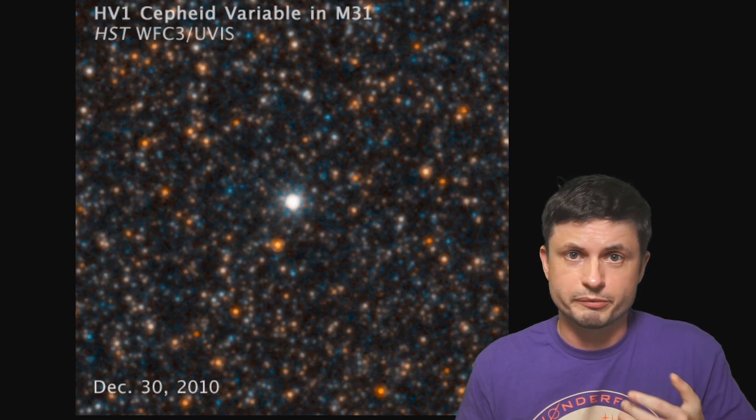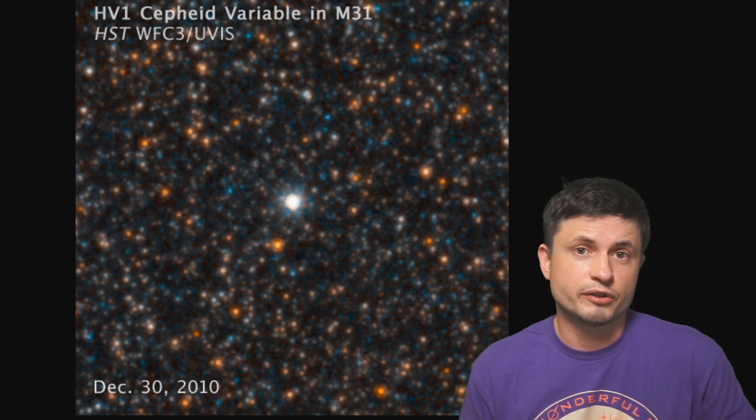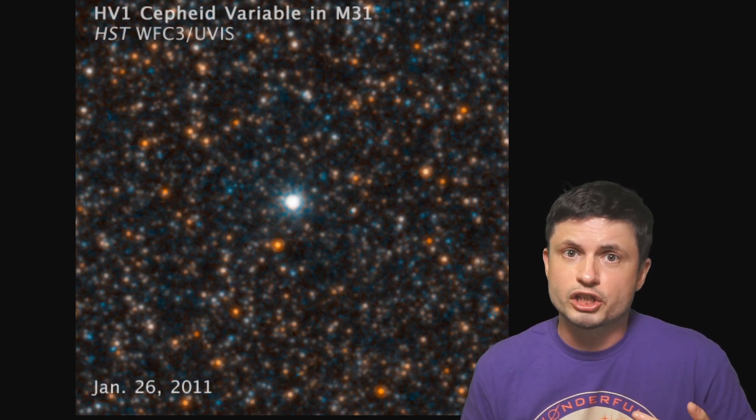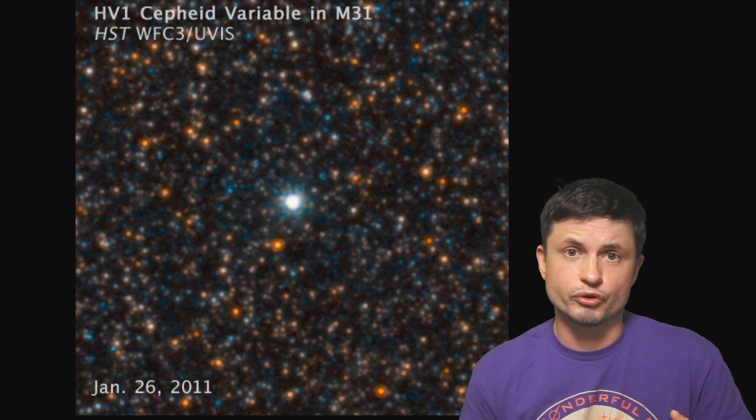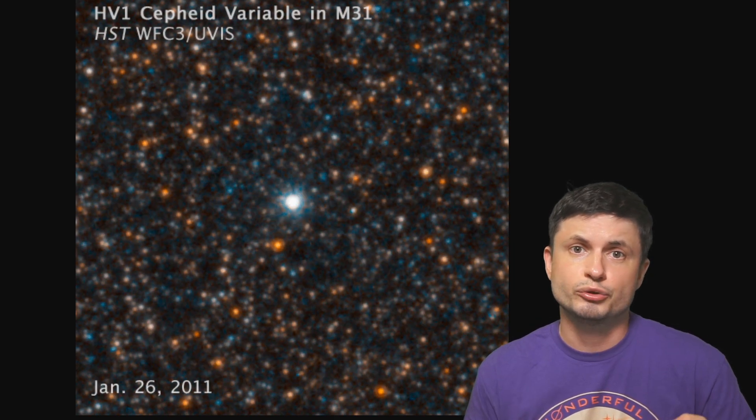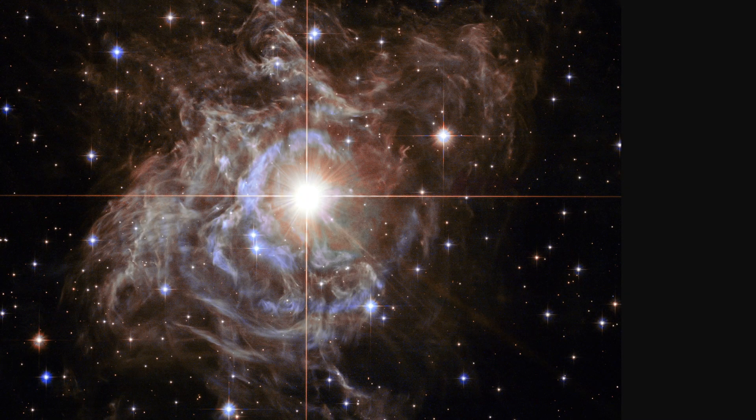But one of the first and I guess most amazing standard candles that was used for decades and that were actually used by Edwin Hubble to technically prove that we live in a universe and not just in a very big galaxy are the objects known as Cepheid variables. Here is one of the more famous examples, a Cepheid variable located in the Andromeda galaxy. And the thing about Cepheid variables is that these are stars that tend to change their brightness extremely periodically.